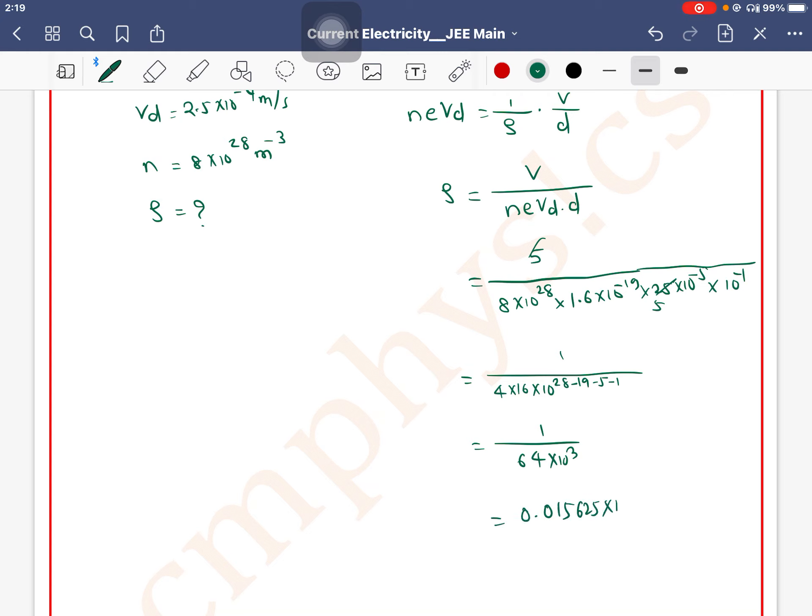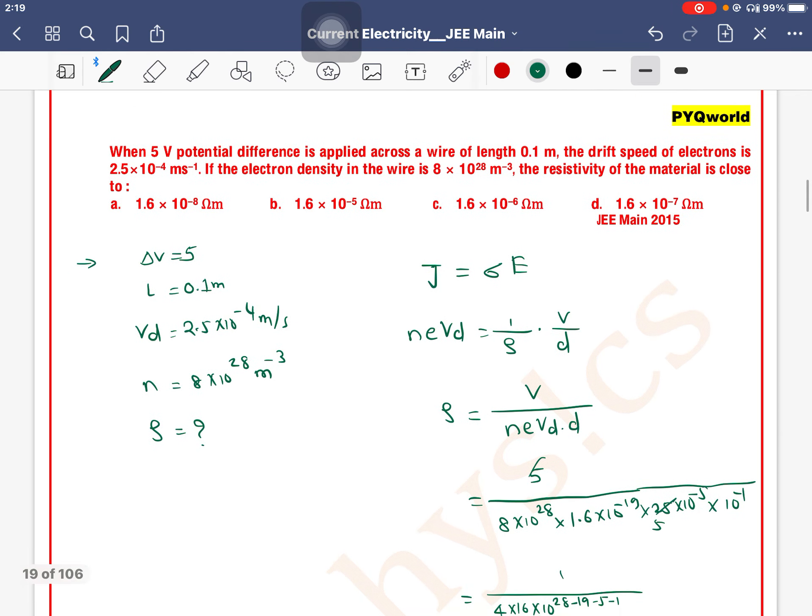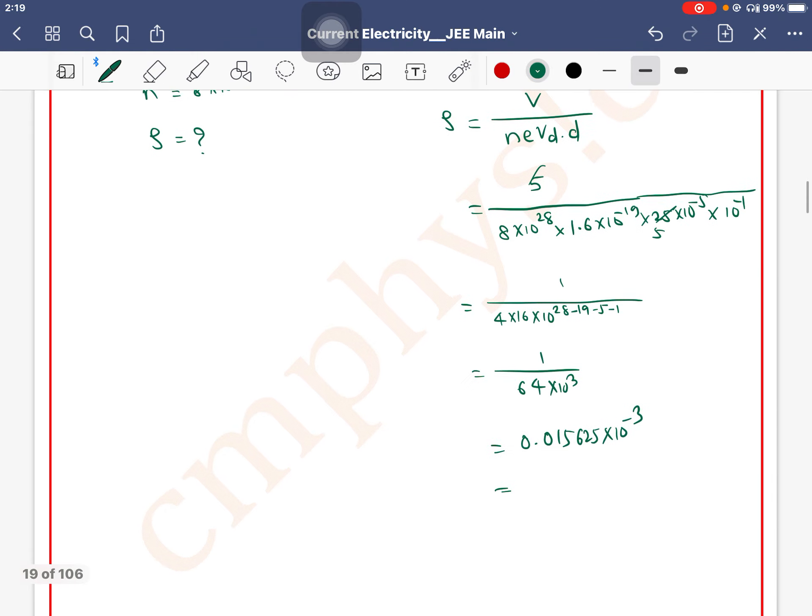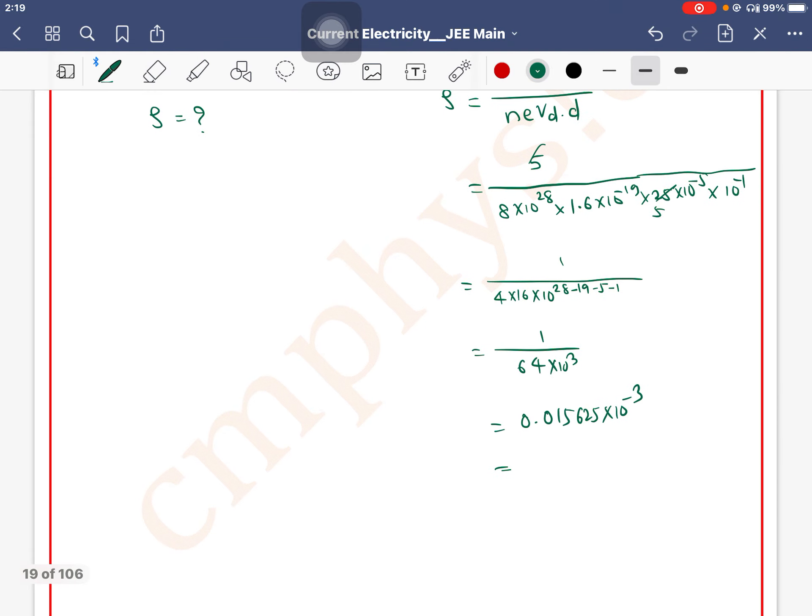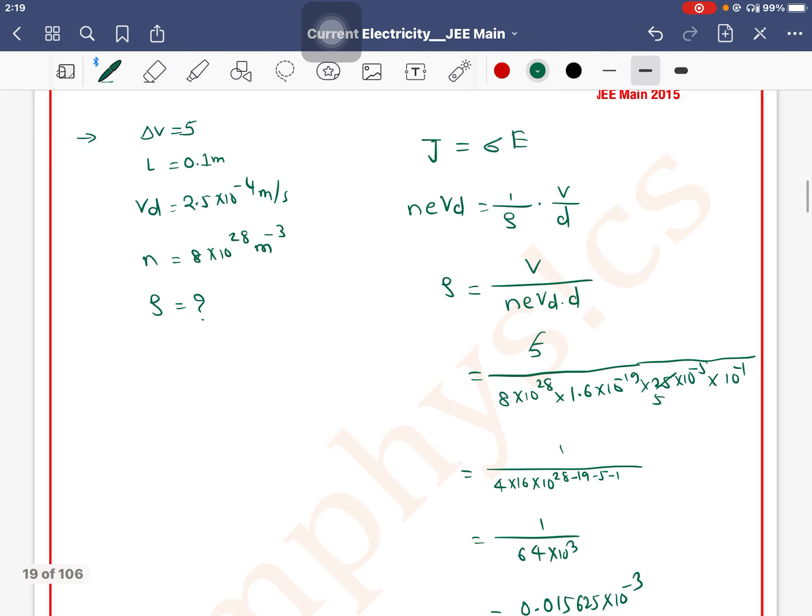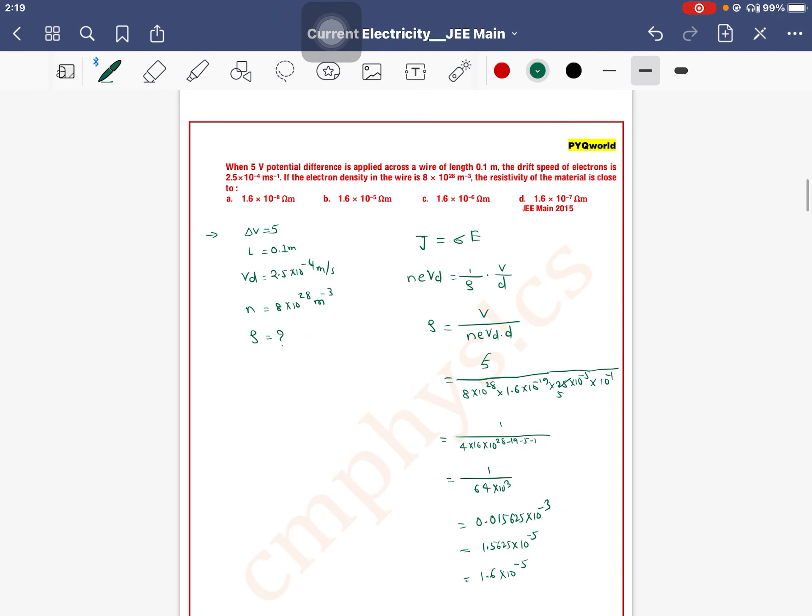This becomes 625 × 10^-3. We can shift the decimal 2 times, so this will be 10^-5. This will be 1.5625 × 10^-5, which is approximately 1.6 × 10^-5. So option B is the correct one.